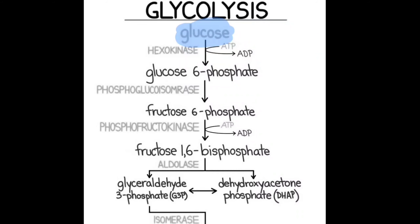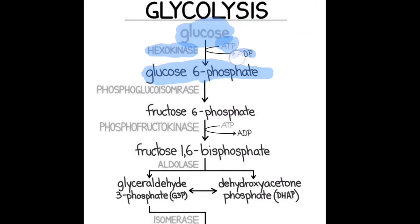The first reaction produces glucose-6-phosphate, which is made due to the action of an enzyme called hexokinase. Here you will be expending one single ATP, and that phosphate will be attached on carbon number 6 of the glucose. The new molecule will be called glucose-6-phosphate.